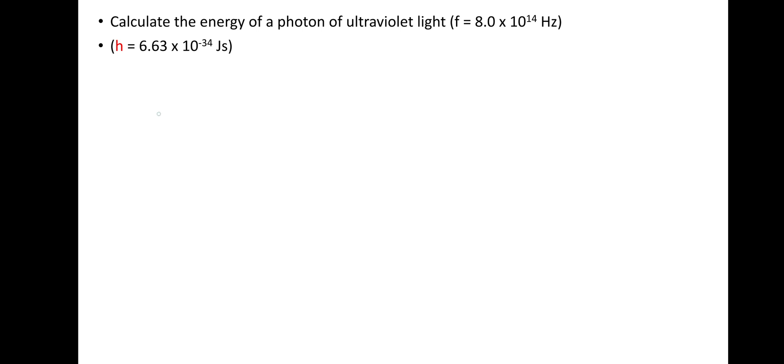So energy of a photon, really straightforward. E equals HF, Planck's constant times frequency. So it's 6.63 times 10 to the minus 34, multiplied by the frequency, 8 times 10 to the power of 14. So that gives an energy of 5.3 times 10 to the power of minus 19 joules.